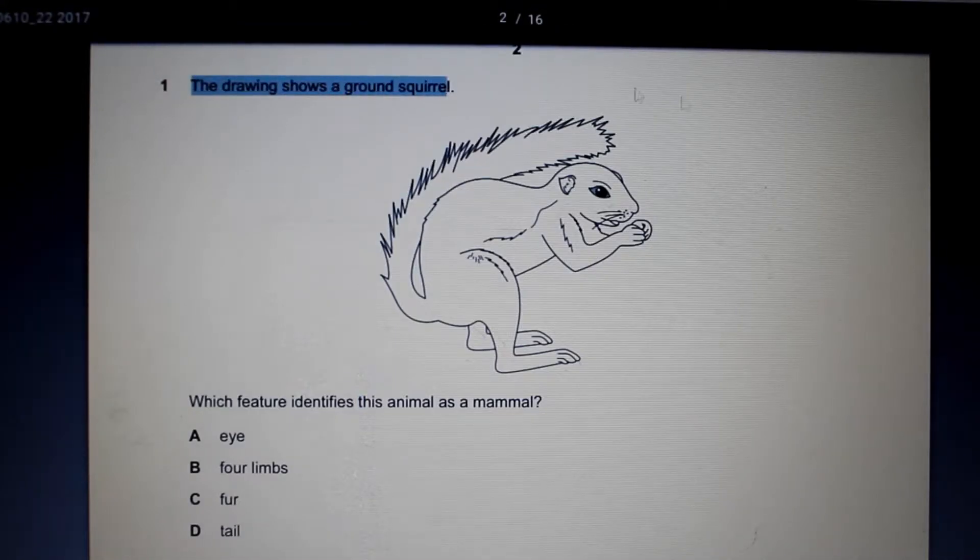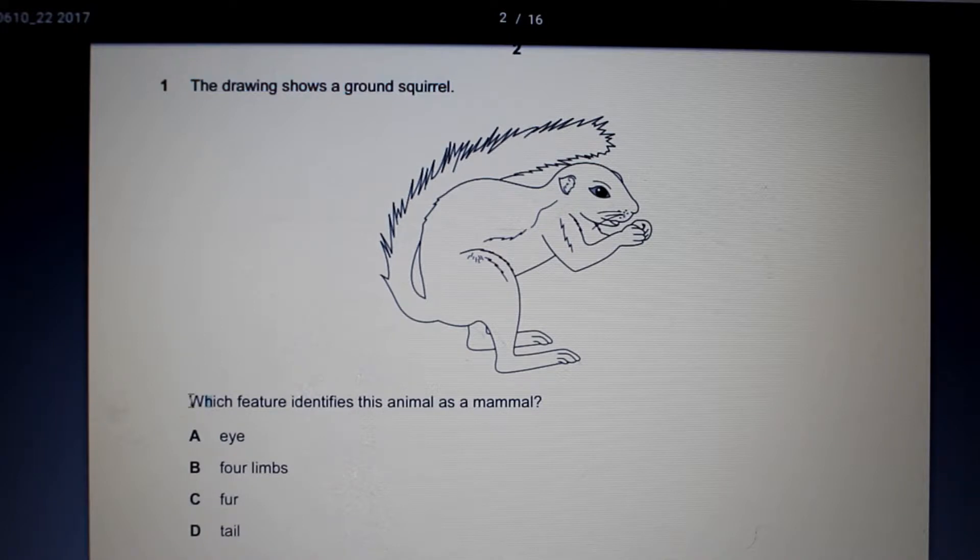So this drawing shows us a ground squirrel. The question asks us which feature identifies this animal as a mammal. What features can we see? We can see the squirrel has eyes, ears, we can see it's got fur. Now we just have to compare what we can see with what we know the characteristics of mammals are. And one of the characteristics of mammals is they're vertebrates that have fur. And that's on the list. So that would be our answer.